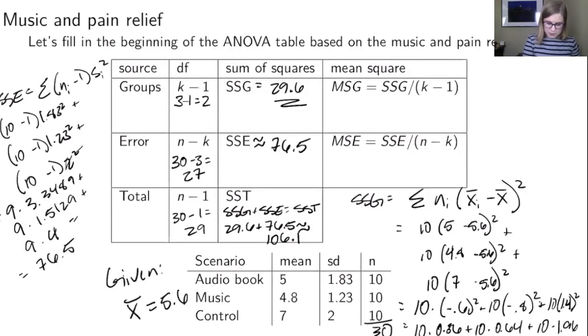So now we've got these pieces. I'm just going to highlight them so they're a little bit easier to see and I'll highlight the final answers in the degrees of freedom as well. So now we can find our mean squares so we can do 29.6 divided by 2 for the mean squares for the groups and that's 14.8 and then we can do 76.5 divided by 27 and that's 2.83 repeating. I'll just highlight those as well so they stand out. So that's the beginning of the ANOVA table for the music and the pain relief data.